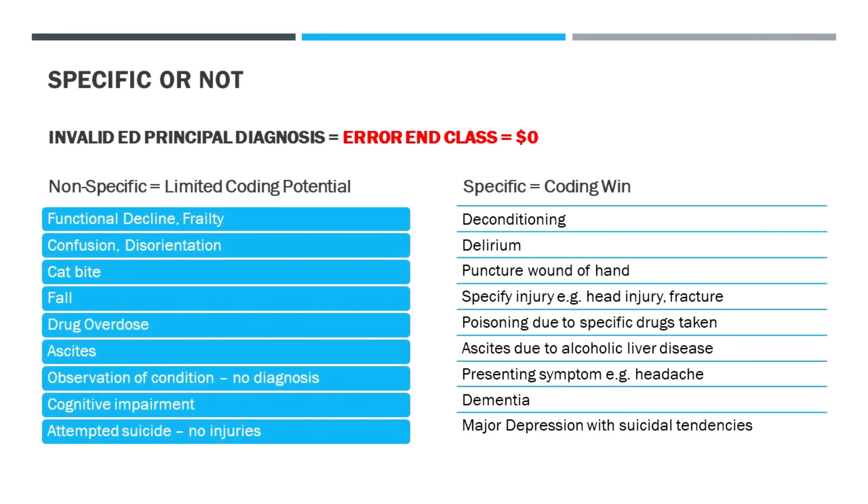Delirium and confusion is another standout. It's very easy to say they were disoriented or presented with confusion. That itself is a symptom or sign. Probably the best code when there's no other specific diagnosis associated is delirium, as delirium can present in many different forms. Ideally, you can find the cause of the delirium and include that in the diagnosis as well.